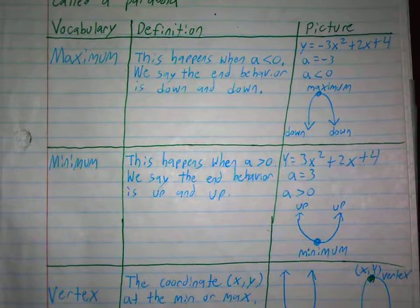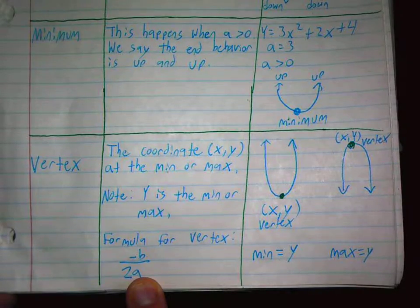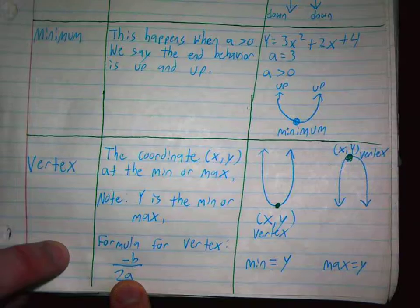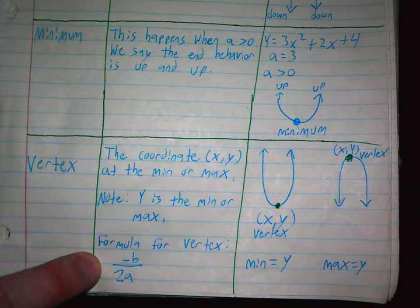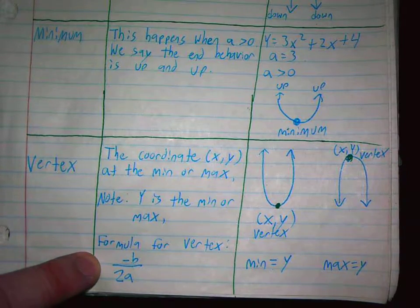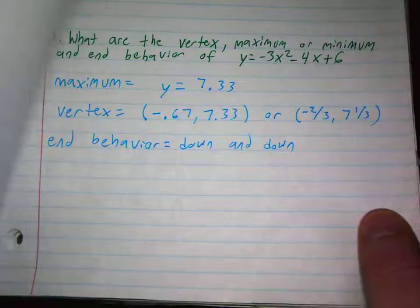It's going to have down and down with the maximum. A positive 3 creates an up-up situation and we would say it has a minimum. At which the minimum or maximum is at, that's called a vertex.